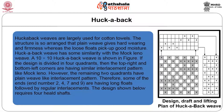Huckaback weaves are largely used for cotton towels. The structure is arranged so that the plain weave gives very hard wear and firmness, whereas the loose floats pick up good moisture. Huckaback weaves have some similarity with the mocklino. A 10 by 10 huckaback weave is shown in figure. The design is divided into 4 quadrants — the top right and bottom left corners have similar interlacement, while the remaining 2 quadrants have plain weave-like interlacement patterns. Ends 2, 4, 7, and 9 have long floats followed by regular interlacement. The design requires 4 heel shafts.